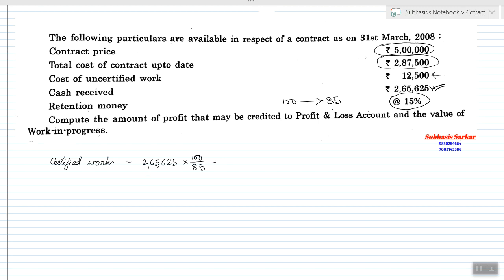Cash Receipt 2,65,625. Certified Work equals 2,65,625 into 100 by 85, which gives us 3,12,500.